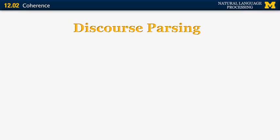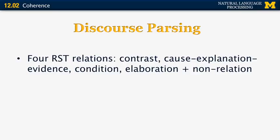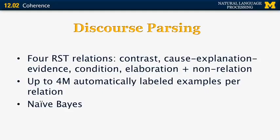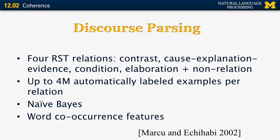The process of identifying the discourse structure is called discourse parsing. The paper I want to discuss briefly is by Marco and Eshihabi from 2002. They looked at four RST relations: contrast, cause/explanation/evidence as a sequence, condition, and elaboration — plus a null category. They used up to 4 million automatically labeled examples per relation, a simple Naive Bayes classifier, and word co-occurrence features to build their discourse trees.